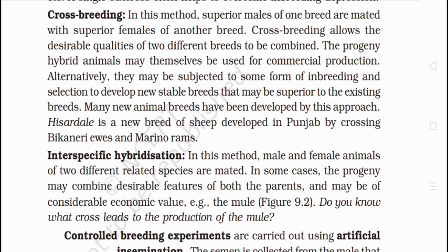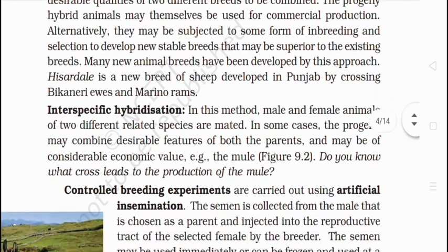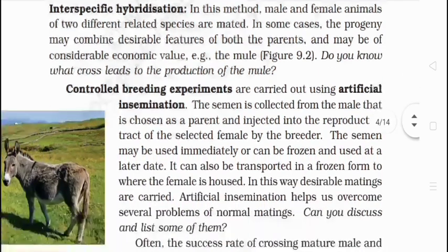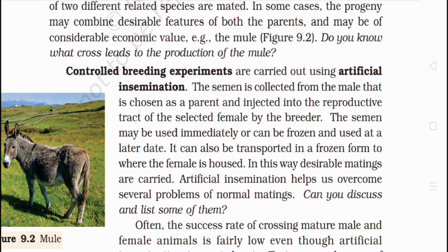An example of a new breed developed through crossbreeding is Hisardella, a new breed of sheep developed in Punjab by crossing Bikaneri ewes with Marino rams. You need to remember the names of such breeds. Interspecific hybridization involves mating between different species. Controlling breeding experiments can be carried out by artificial insemination.